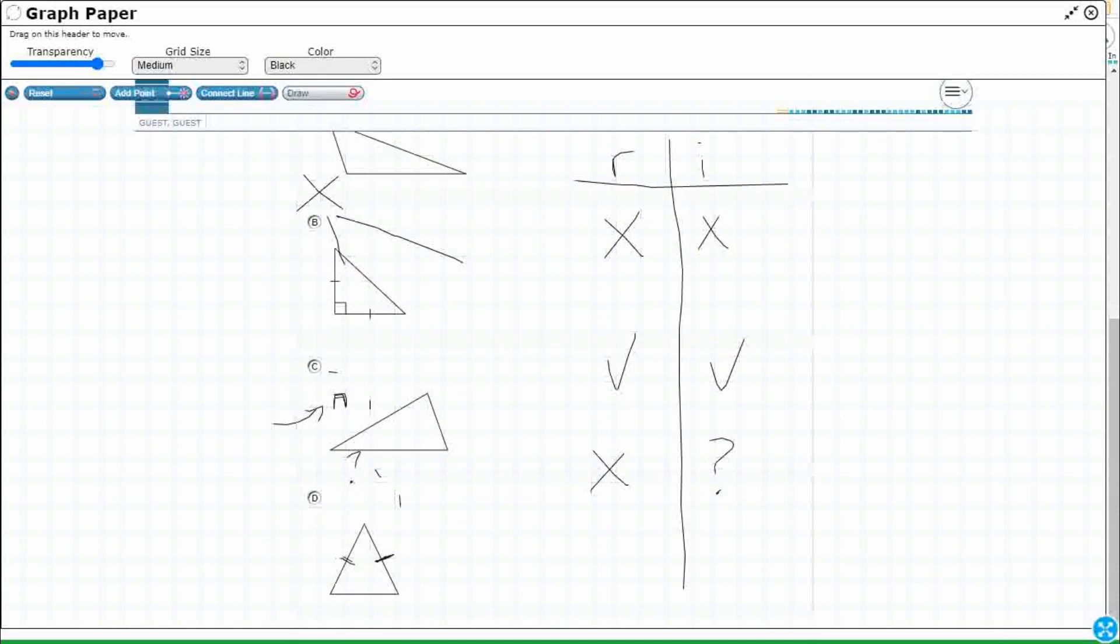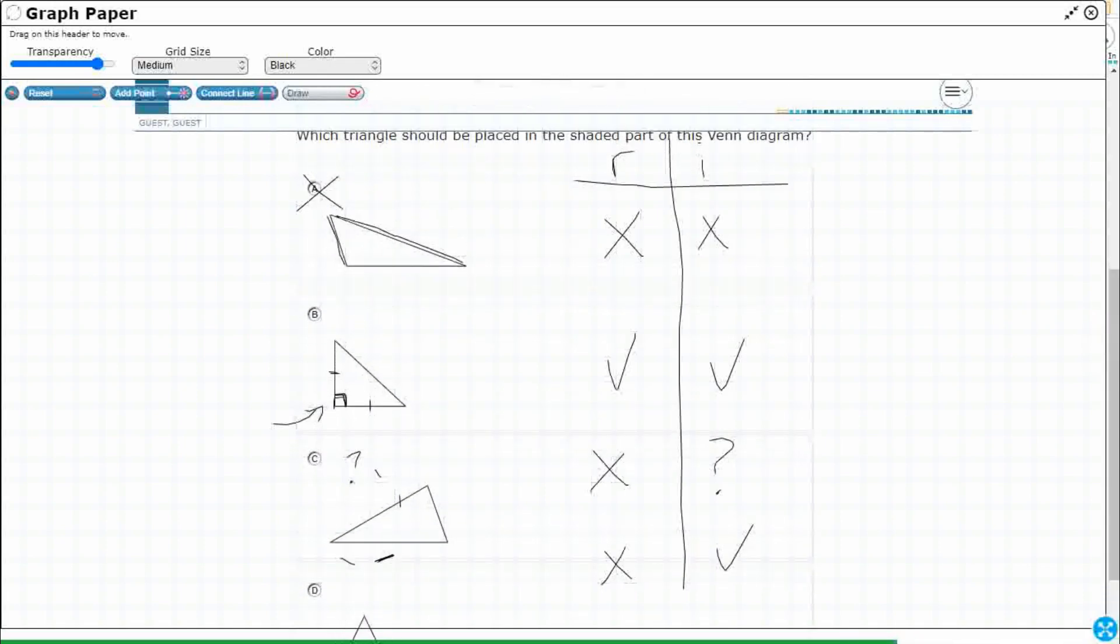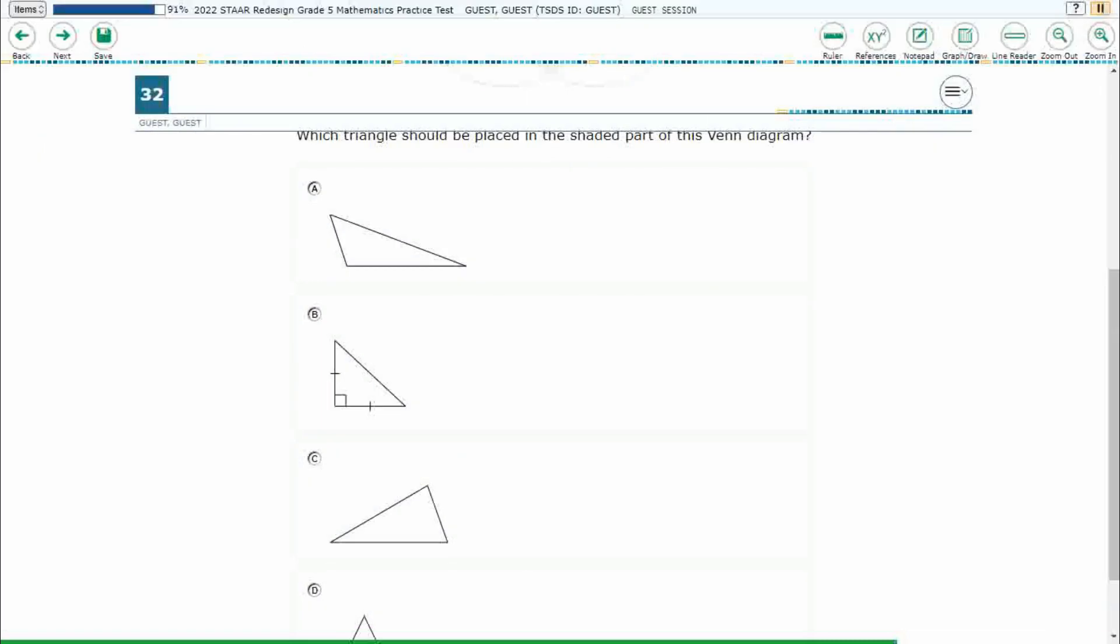Let's check our D. Definitely isosceles because they do label it, which makes me think C is not, if they're going to label that, but no right angle. Alright, so this is just an acute isosceles here on D. That looks like an acute scalene on C, and then on A we're looking at an obtuse scalene. But our answer here is this right isosceles B.